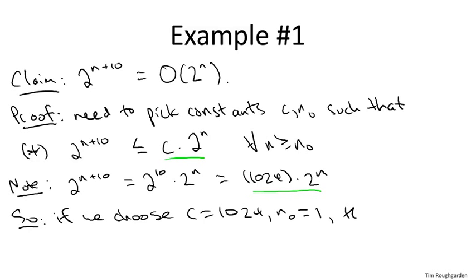Then indeed, star holds, so the desired inequality. And remember to prove that one function is big O of another, all you gotta do is come up with one pair of constants that works. And we've just reverse engineered it, just choosing the constant c to be thousand twenty-four and n naught to be one works. So this proves that two to the n plus ten is big O of two to the n.